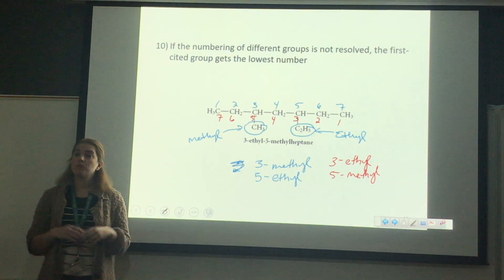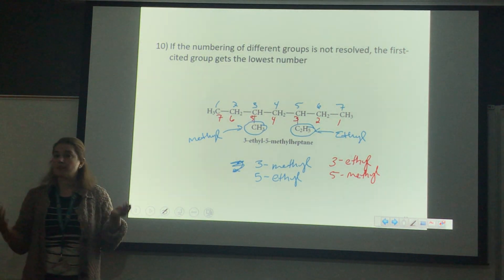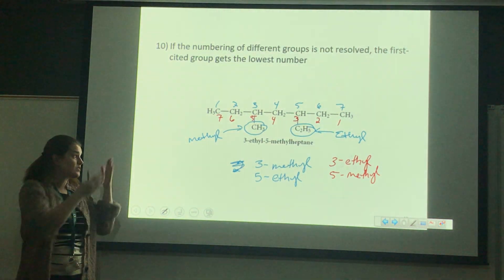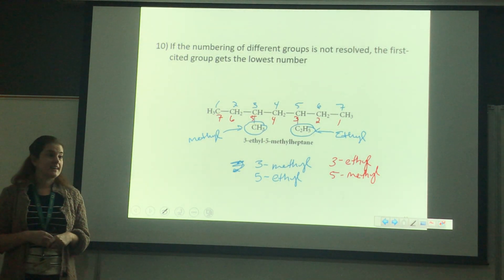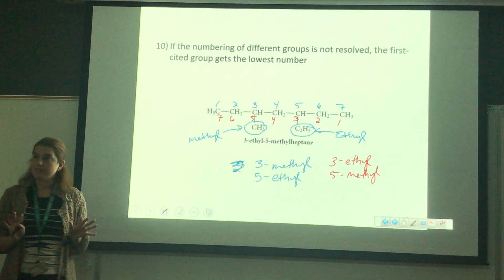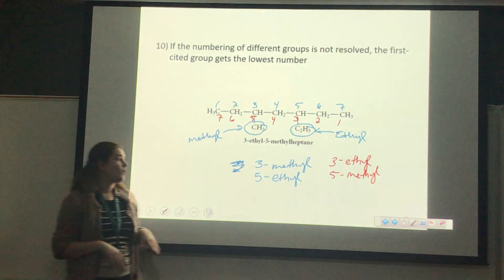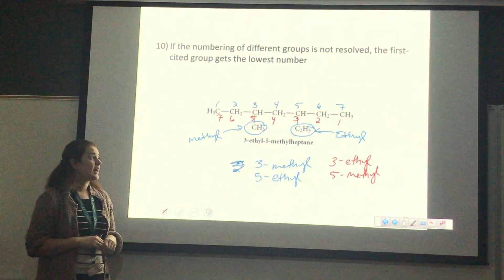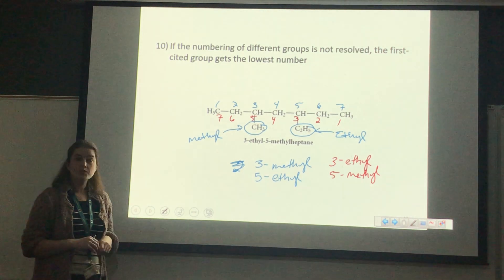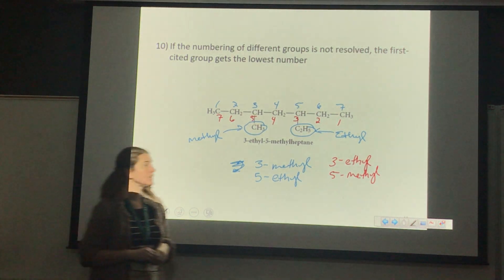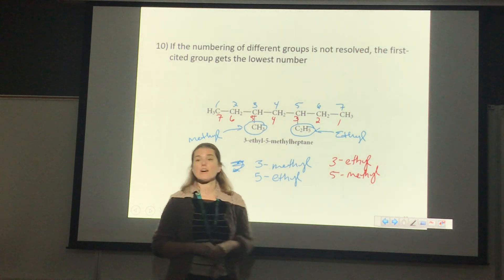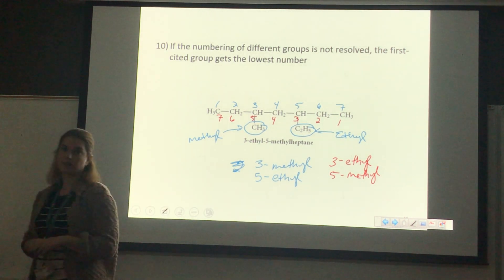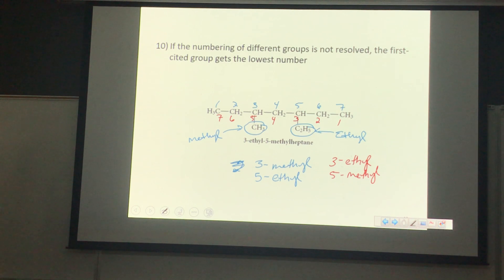So 1, 2, 3, 4, 5, 6, 7. Could I have drawn that whole structure upside down? Yes. Could I have drawn it vertically? Absolutely. We've got 2-bromo, so on carbon number 2 I'm going to put a little leg and draw a bromine. When bromine is a branch, it goes from bromine to bromo.